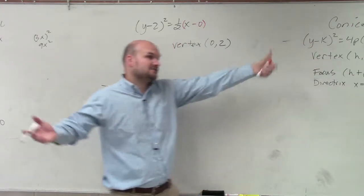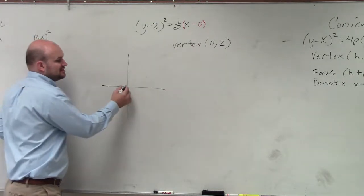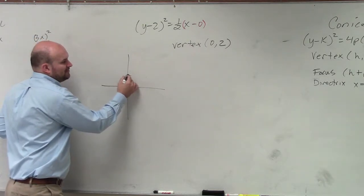So y minus 2, which means k is 2. So my vertex is (0,2). I go over there and plot the vertex and label it.